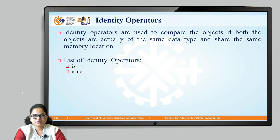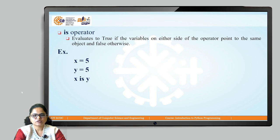The last type of operator is the identity operator. Identity operators are used to compare two objects — specifically, whether both objects are actually the same, sharing the same data type and memory location. There are two types of identity operators: 'is' and 'is not'. The 'is' operator evaluates to true if the variables on either side are the same objects, otherwise it results in false.